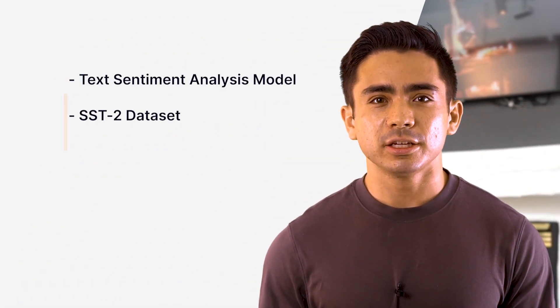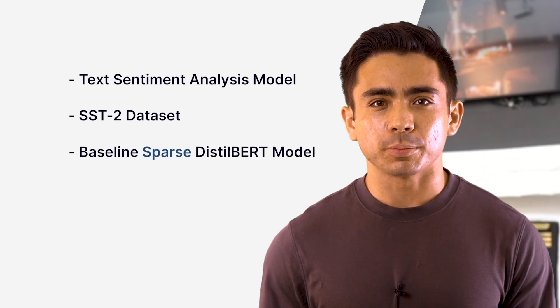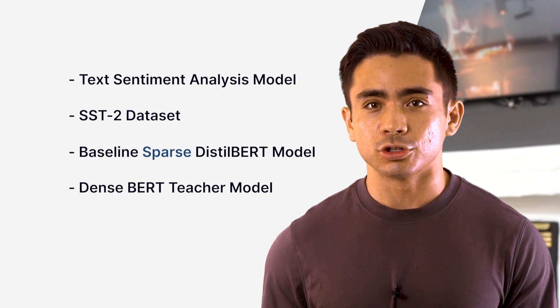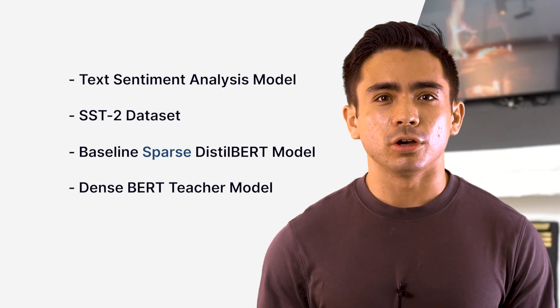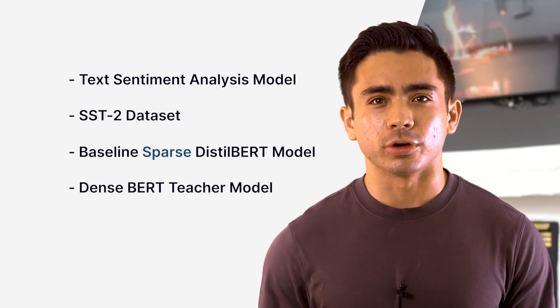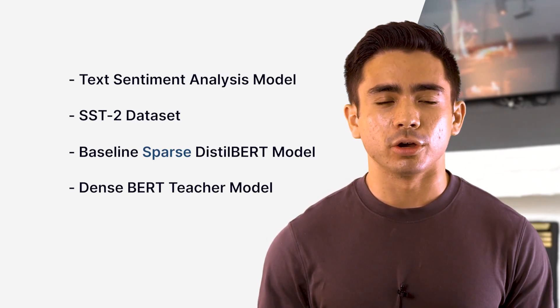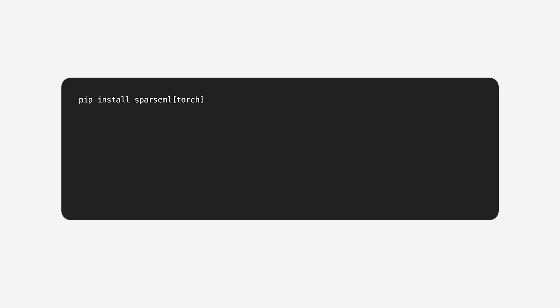Let's work on an example now of sparse transfer learning using tools open sourced in our sparse ML Python package. For this example, we'll be sparse transfer learning a text sentiment analysis model on the SST-2 dataset from a baseline sparse DistilBERT model and a dense BERT teacher model. You can follow along with these commands on the screen or use this tutorial to copy these commands as we go. To sparsify transformer models with sparse ML, we need to install sparse ML and PyTorch. We can do this simply by running pip install sparseml[torch] in our terminal.